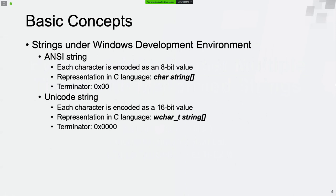First, let's talk about some basic concepts. Streams can be divided into two categories on Windows: ANSI strings and Unicode strings. For ANSI strings, each character is encoded as an 8-bit value. We can define a char type array in C language to store the string data. The string terminator is a 1-byte null character.